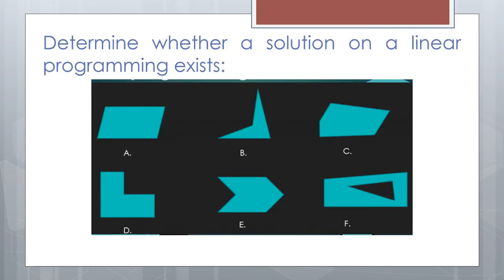Let's determine whether a solution on a linear program exists for additional examples. For a parallelogram, all interior angles are less than 180 degrees and the corner points are simply connected — so there is a solution for this shape.